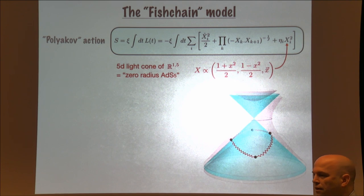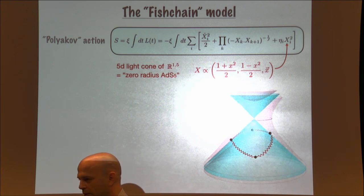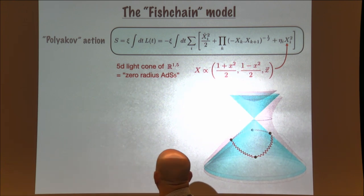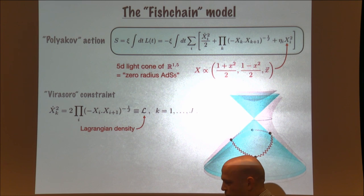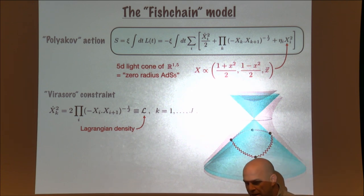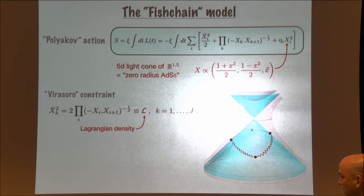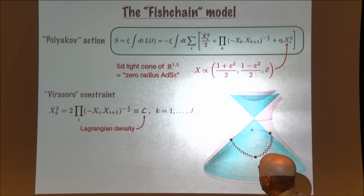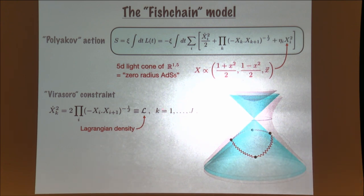This action still has time reparametrization symmetry. The action comes with a Virasoro-type constraint telling us that the Lagrange density is constant along the chain and independent of the index k, and that the kinetic term equals the potential term up to some factor. The way we fix the remaining gauge symmetry — analogous to what we do in string theory — is to fix the Lagrange density to be constant and equal to one. After this gauge fixing, there is no more gauge symmetry.